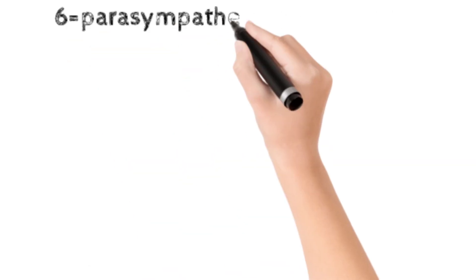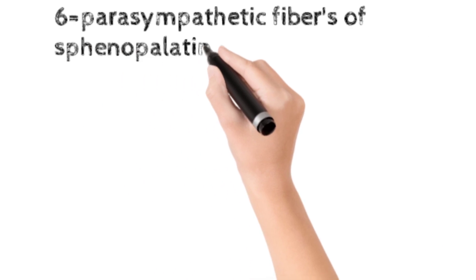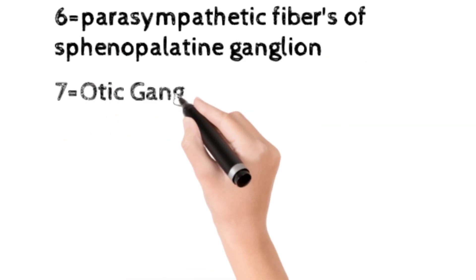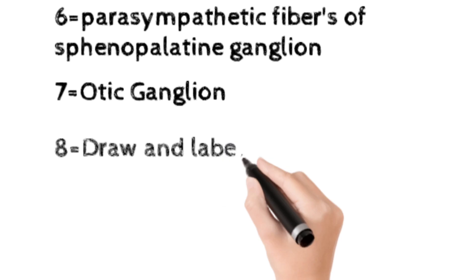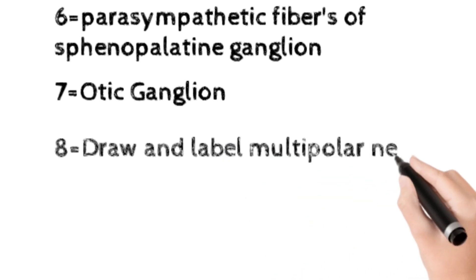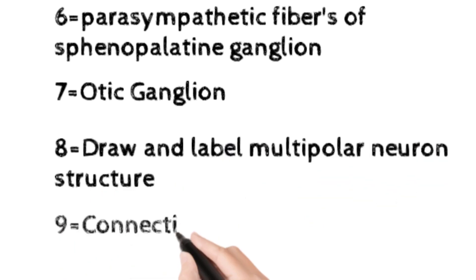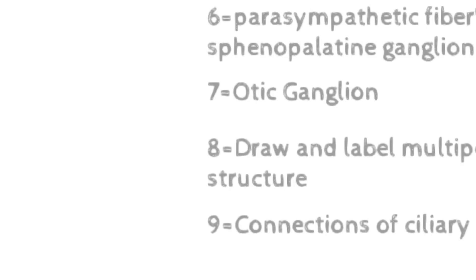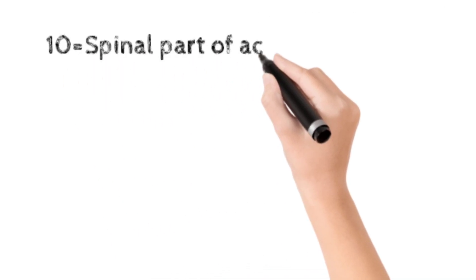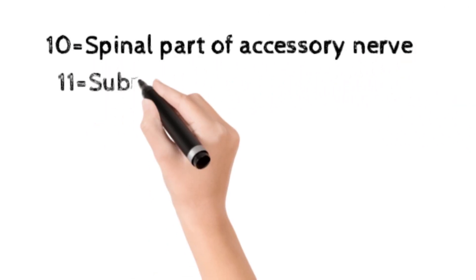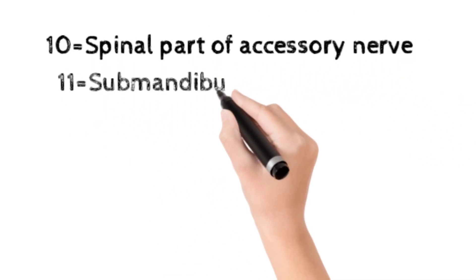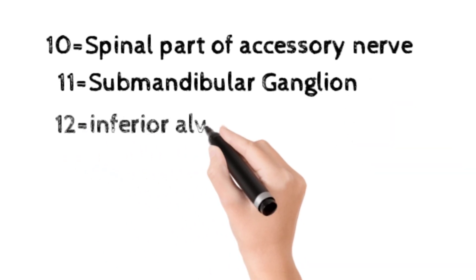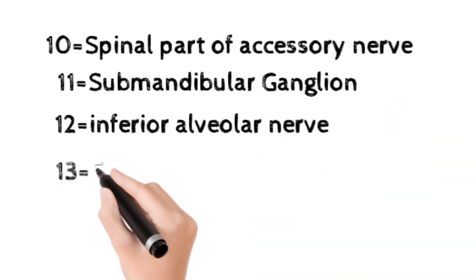The sixth topic is parasympathetic fibers of the sphenopalatine ganglia. The seventh is the otic ganglia. The eighth is the draw and label multipolar neuron structure. The ninth is the connections of the ciliary ganglia. The tenth important topic is the spinal part of the accessory nerve. And next is the submandibular ganglia, followed by the inferior alveolar nerve.